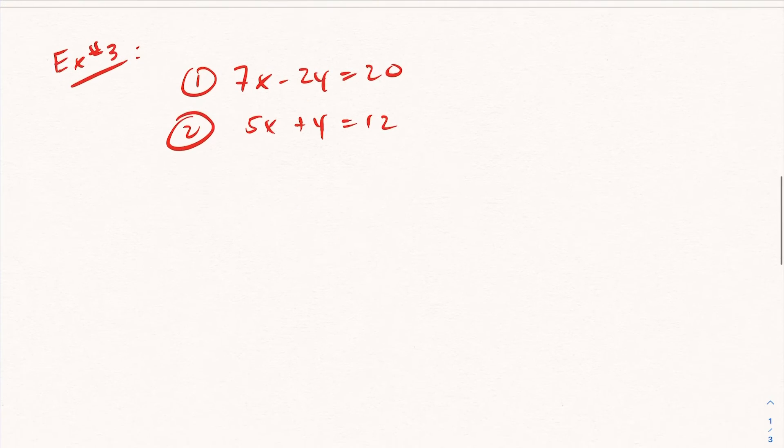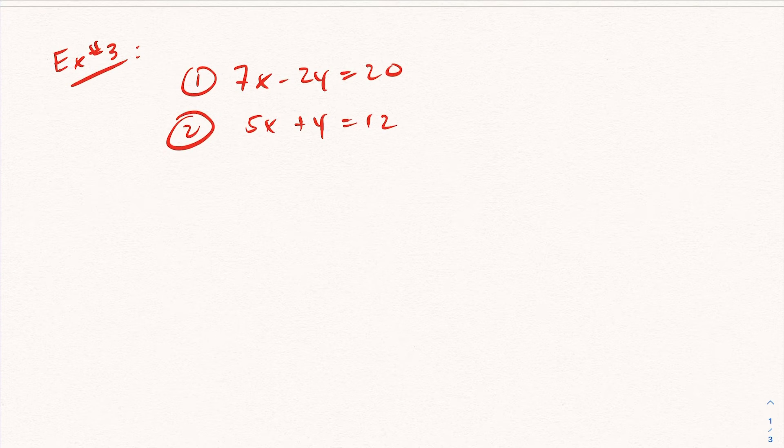And example three here, same deal. I don't see any way to reduce this. I can't divide across by something. So the easiest way is to do a slope argument. So one way you can do it is put this in the form y equals mx plus b.